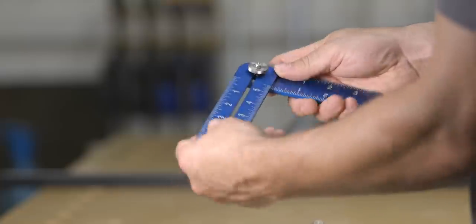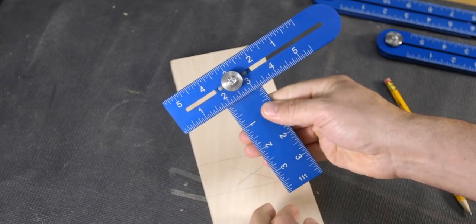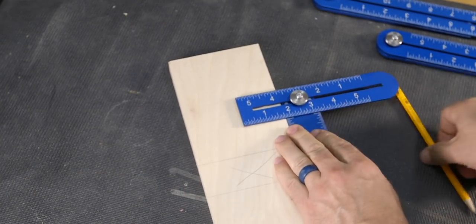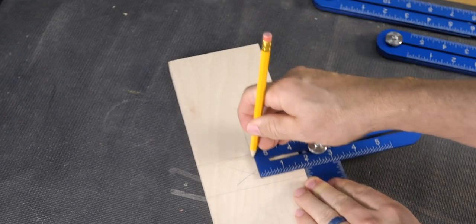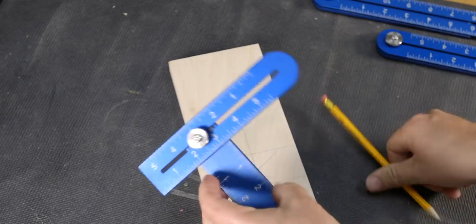It holds these angles without having to tighten down the knob. It also acts as a combination square, which means you can slide it to any desired measurement and make a scribe line for rip cuts, screw or nail locations, or any other task you can think of.